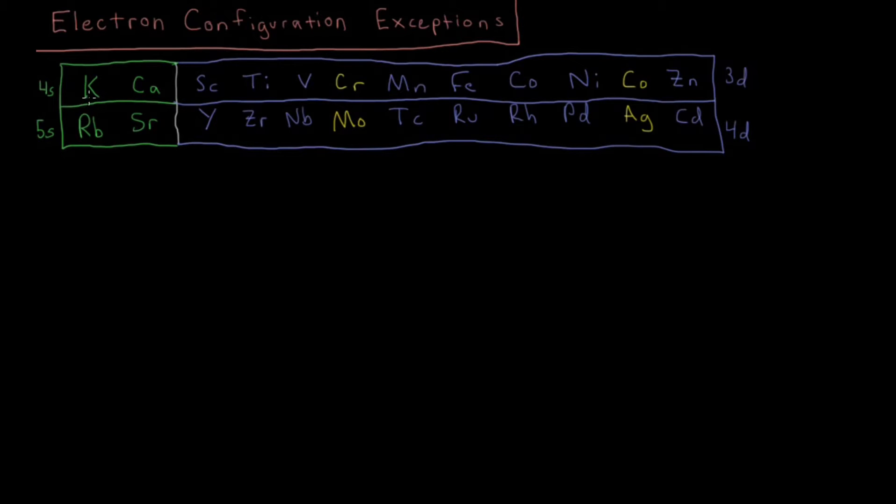So I've got a specific part of the periodic table here, specifically the part where we're adding to the 4S shell and then the 3D shell, and then the row below it, 5S and 4D. Part of the S block, part of the D block, and then the P block being over here.